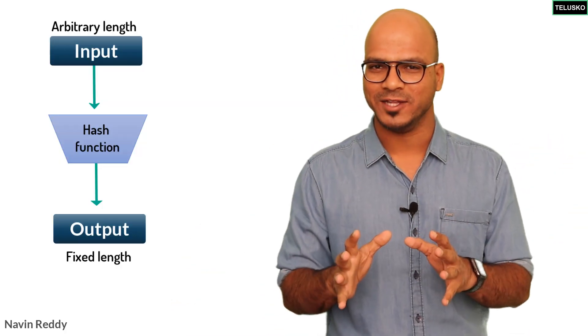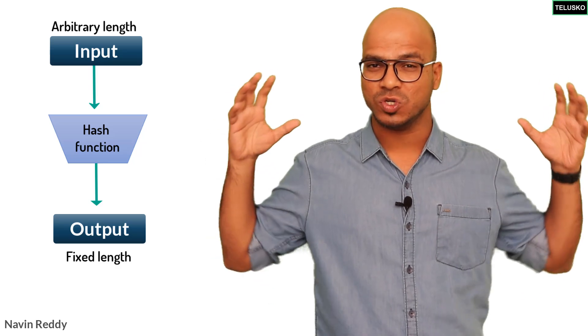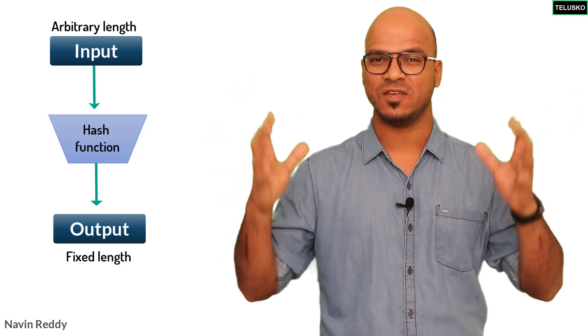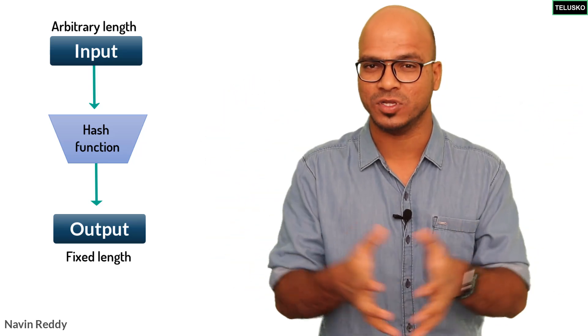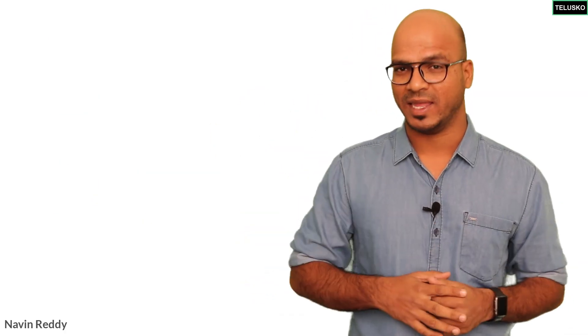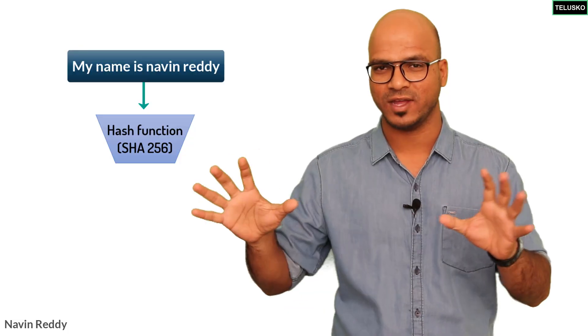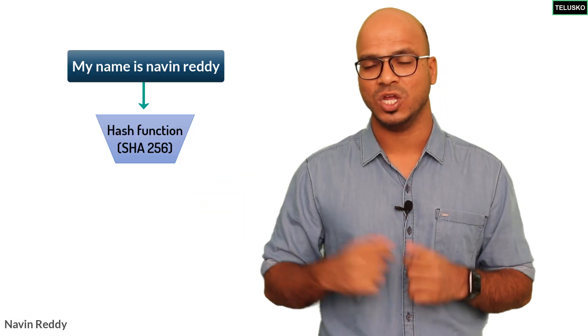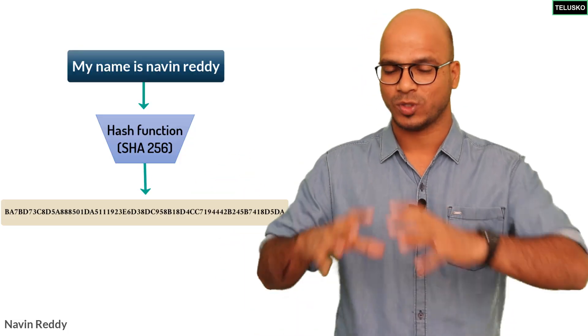The input can range from one bit to thousands of millions of bits. Even if you are passing a huge chunk of data — let's say 5 GB — you will still get a fixed length output. For example, if I take my name, 'Navin Reddy,' and type that text, it goes into a function and that function returns a hash value.